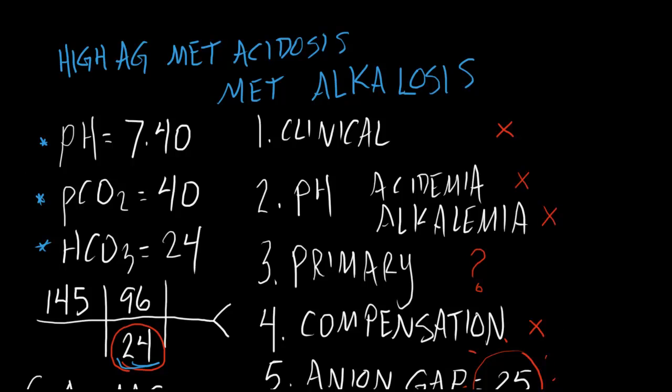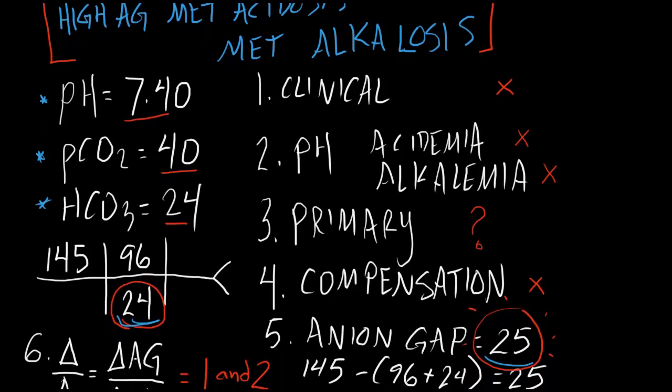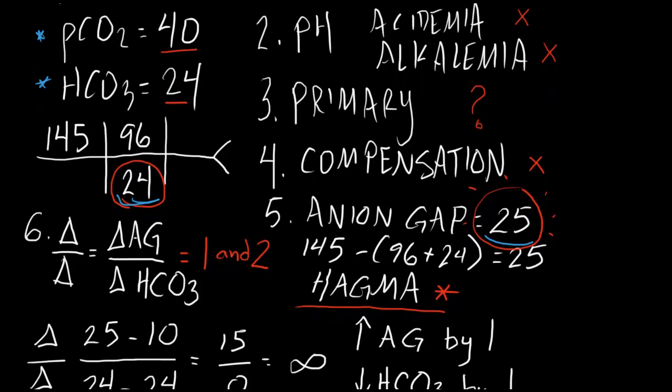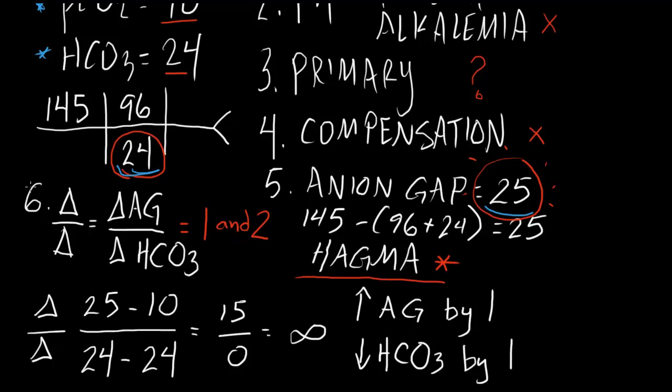So a seemingly innocuous pH normal, pCO2 normal, bicarb normal, can create a very significant acid-based disturbance that involves high anion gap metabolic acidosis and a metabolic alkalosis. If you follow these particular steps, in terms of the clinical stem, the pH, the primary, compensation, anion gap, and most importantly, the delta-delta, you have to be able to appreciate it. You will be able to appreciate it.